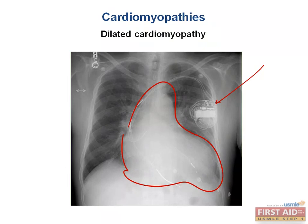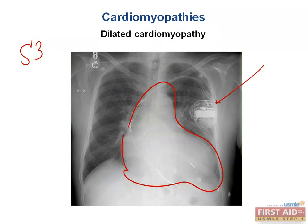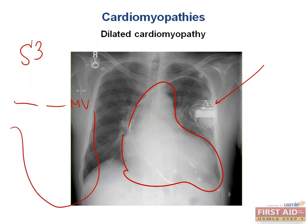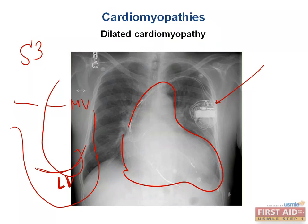We can hear an S3 heart sound because the hypocontractile heart accumulates blood within the left ventricle. The S3 heart sound comes from turbulent flow when incoming blood splashes against blood collecting in the left ventricle — blood that was not pushed out into the ventricular outflow tract from the previous contraction. When the new blood comes in and hits that baseline blood, it causes vibrations that produce the S3 you can auscultate with your stethoscope.